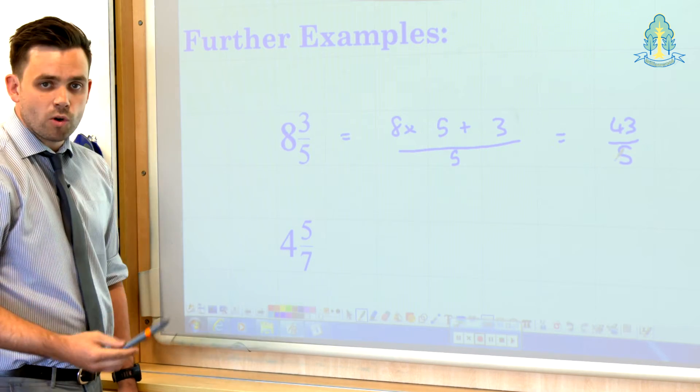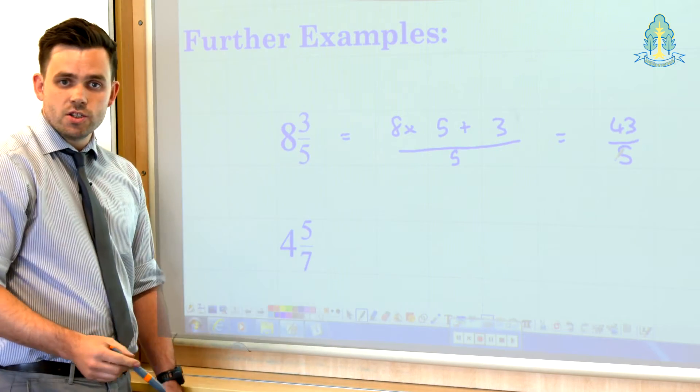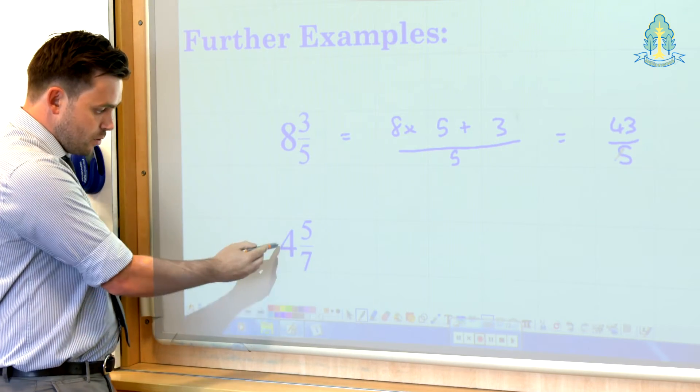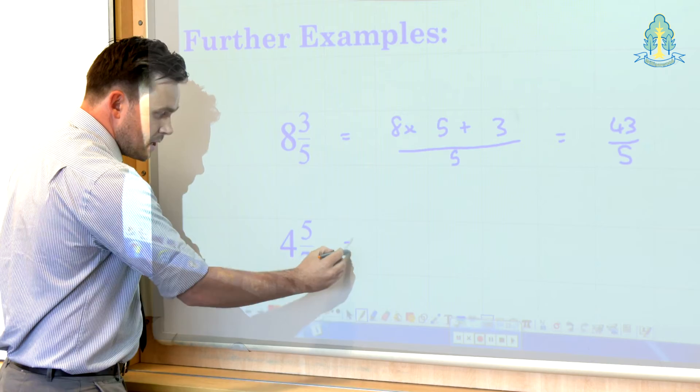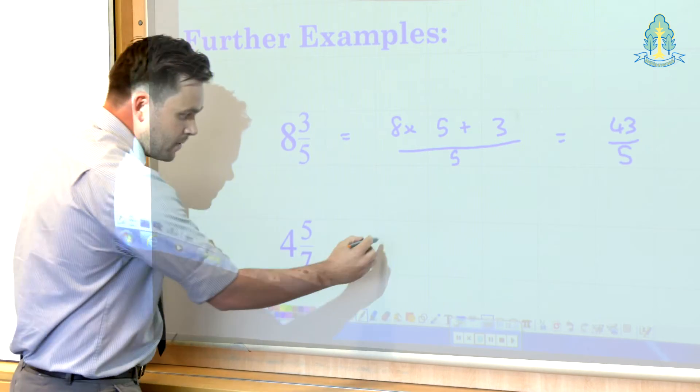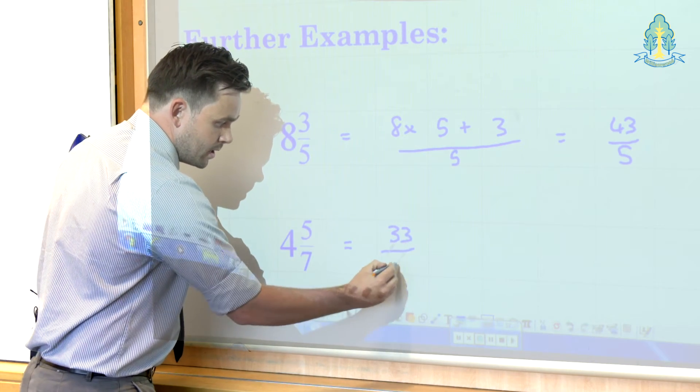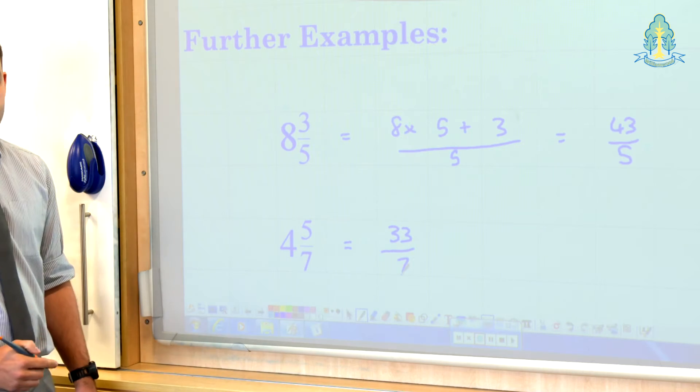After a while, when the pupils are a bit more confident, they may dispense with this working and just do it mentally. For example, 4 lots of 7, 4 multiplied by 7, 28 plus 5 gives us 33 sevenths.